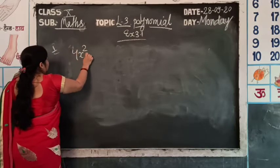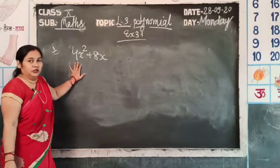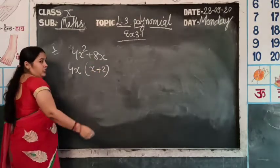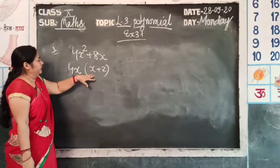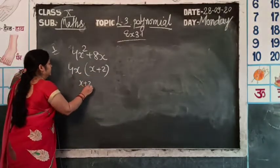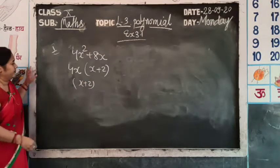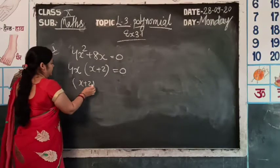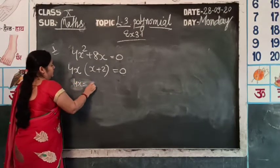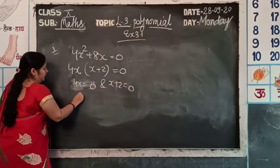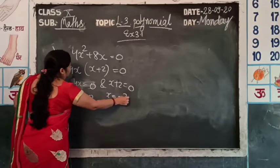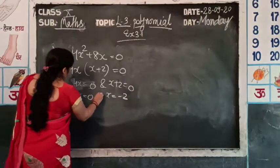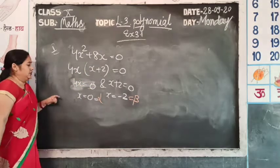4x² + 8x — take out the common factor 4x: we get 4x(x + 2). Set equal to 0. Then 4x = 0 gives x = 0, and x + 2 = 0 gives x = -2. So alpha = 0 and beta = -2.